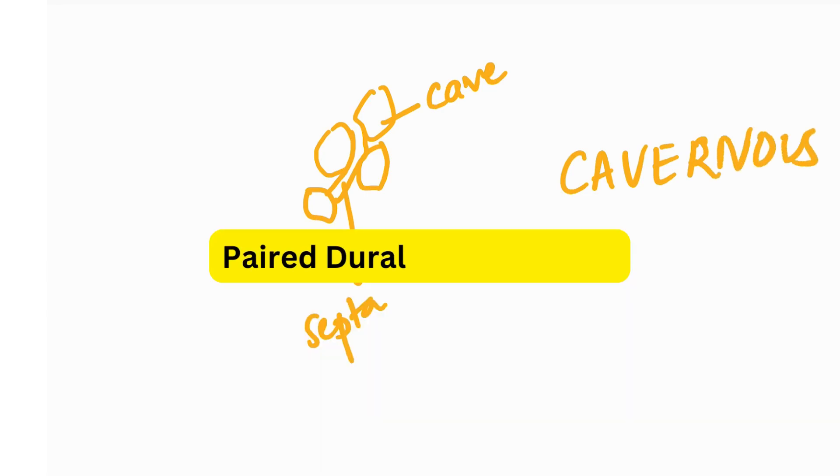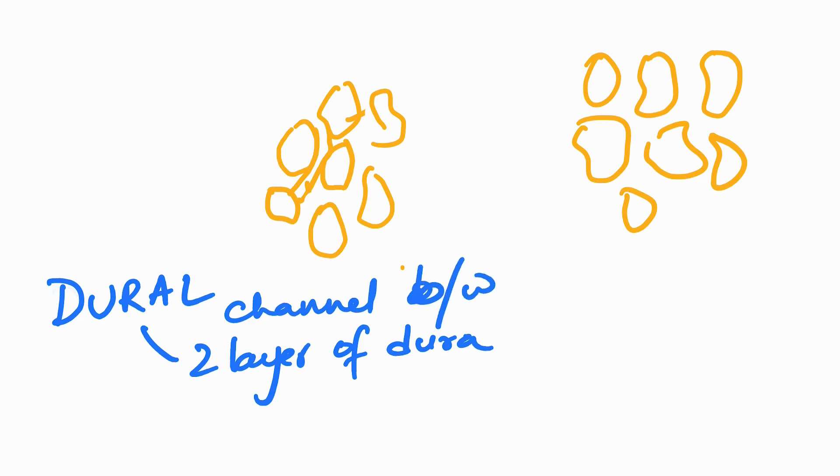Now this is a paired dural venous sinus. What is dural sinus? Dural venous sinus is basically two layers of dura which has channels in between. Channel between two layers of dura. So here we are talking about the meningeal layer and the endosteal layer. There are small channels between the meningeal and the endosteal layer of dura mater.